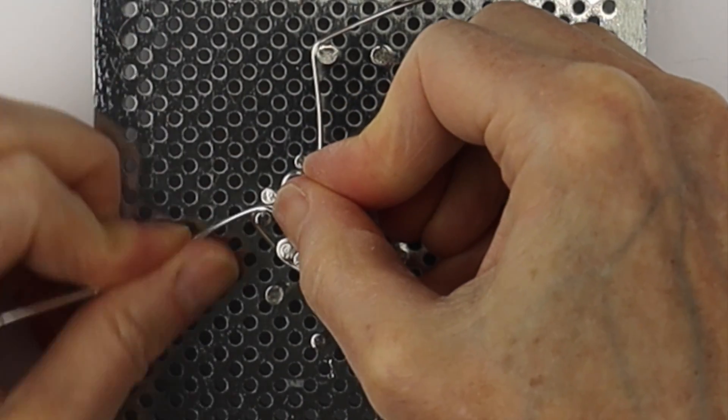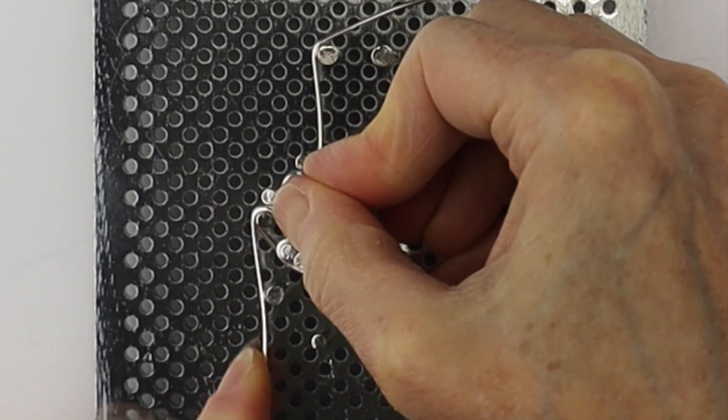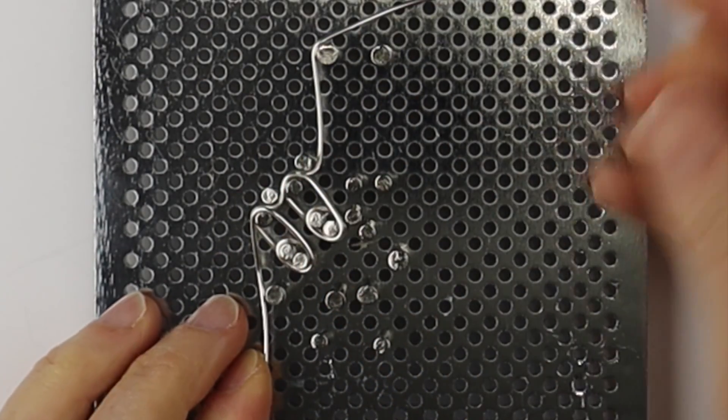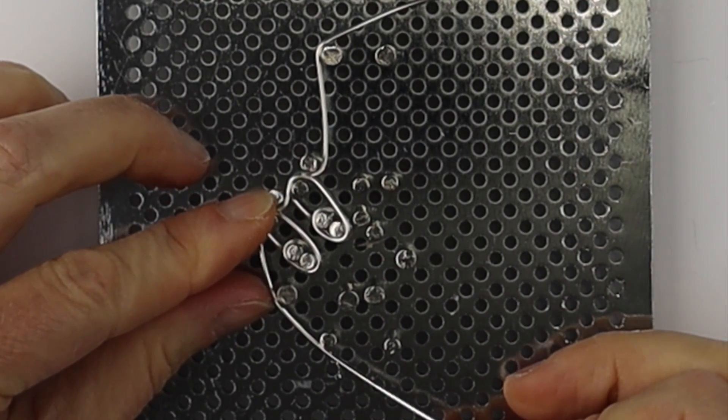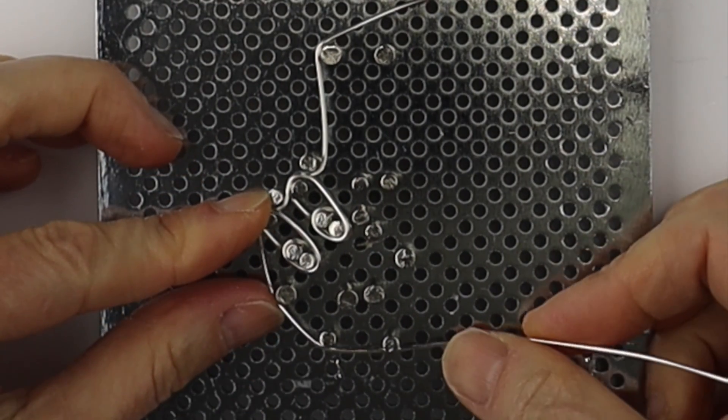So now, once we've done those fingers, we're going to work our way down to the palm and bring it right around to the base of the hand and then straight across.